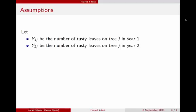In using the paired t-test, we're going to be making some assumptions, and before we get to that, we want to introduce the notation. So here, y1j is the number of rusty leaves on tree j in year one, and y2j is the associated quantity, but in year two. The assumption then is that this difference within a tree, y1j minus y2j, which we're going to now refer to as dj, has an independent and identically distributed distribution from a normal distribution with mean mu and variance sigma squared.